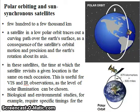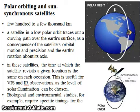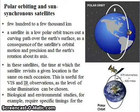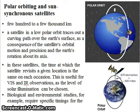A satellite in a low polar orbit traces out a curving path over the Earth's surface. The time at which the satellite revisits a given location is the same on every occasion, which is particularly useful for visible and infrared observations as the level of solar illumination can be chosen. For example, biological and environmental studies such as crop monitoring or water quality of lakes and rivers monitoring require specific timings for data collection. In sun-synchronous satellites, the revisit time will be the same local time every time the satellite visits that particular location.